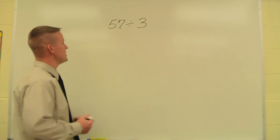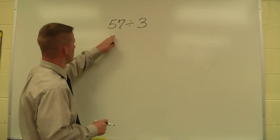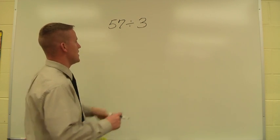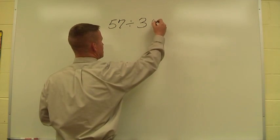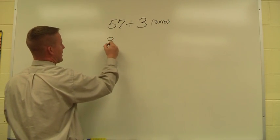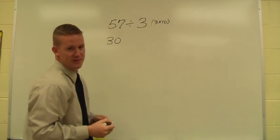So we take a number like 57 and we always take the divisor first. Take that 3 and in my head I think what is 3 times 10. 3 times 10 is 30, so my first friendly part of 57 is going to be 30.